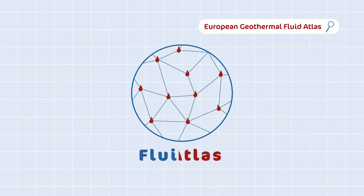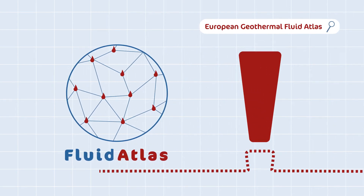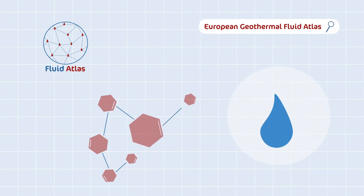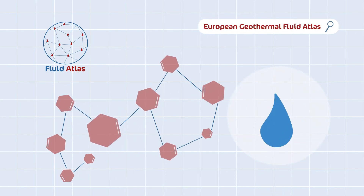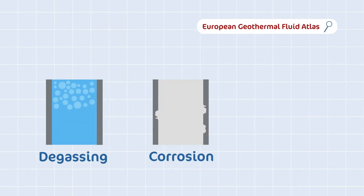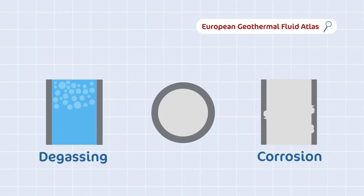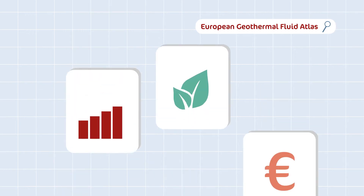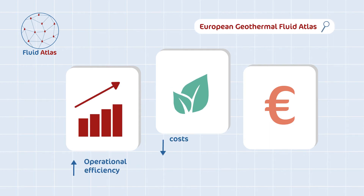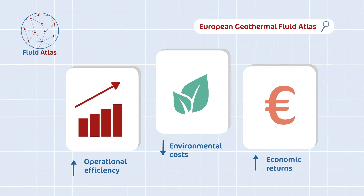But why is a service like this so important? Knowing more about the chemistry of geothermal fluids is crucial to avoid common operational problems like degassing, corrosion of plant components, or precipitation of minerals, known as scaling. Preventing these issues is paramount to improving the operational efficiency, reducing the environmental costs and maximising the economic returns of a power plant.